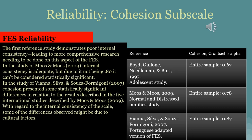In terms of reliability for the FES, we'll start with the internal consistency from the study of Moos and Moos. Internal consistency showed to be quite adequate for the cohesion subscale — as you can see on our chart, their Cronbach's Alpha for the entire sample was 0.78, the highest we will discuss. Moving on to Vianna, Silva, and Sueza for Magoni, the internal consistency of the cohesion subscale also showed good results, with the Cronbach's Alpha being higher than the Moos and Moos study at 0.87. The lowest case, showing not strong internal consistency, was Boyd, Goulin, and Niedelman — the adolescent study — with a Cronbach's Alpha of 0.67.